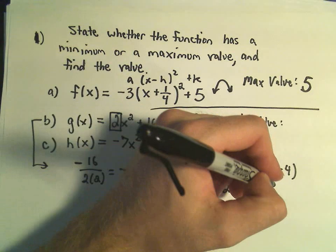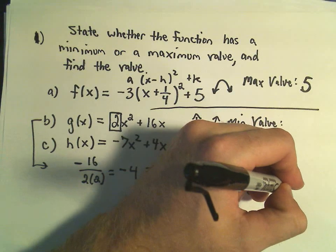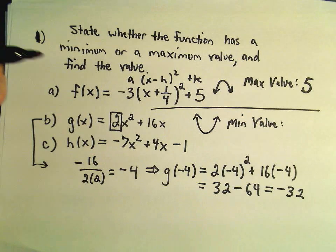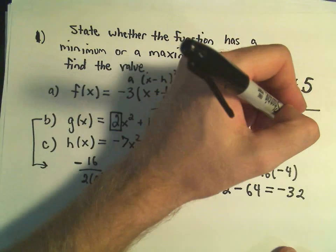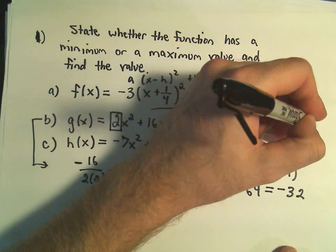and 32 minus 64 is going to be negative 32. So in this case, our minimum value will be negative 32.